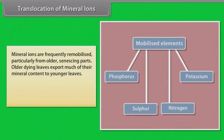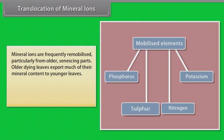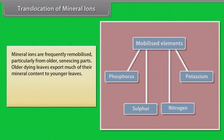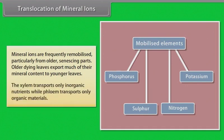Older dying leaves export much of their mineral content to younger leaves. Similarly, before leaf fall in deciduous plants, minerals are removed to other parts. Elements most readily mobilized are phosphorus, sulfur, nitrogen, and potassium. Some elements that are structural components, like calcium, are not remobilized. The xylem transports only inorganic nutrients, while phloem transports only organic materials.